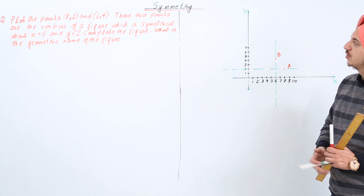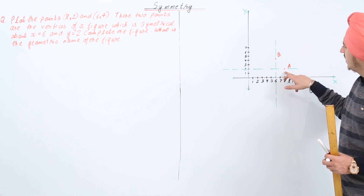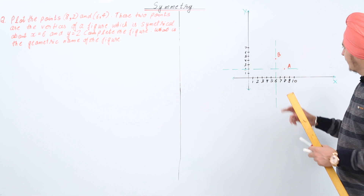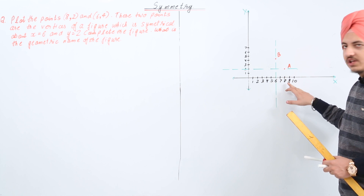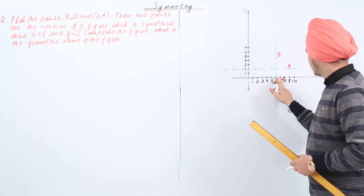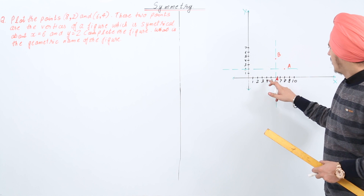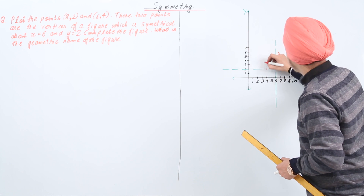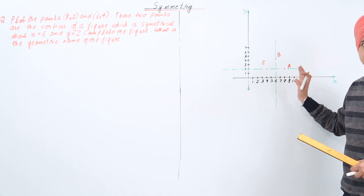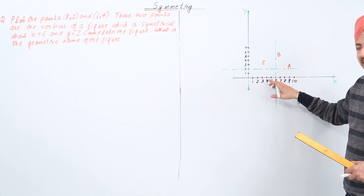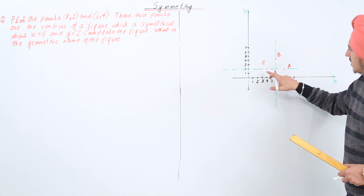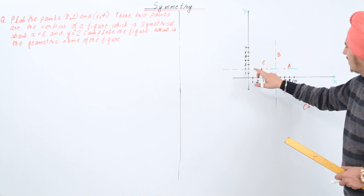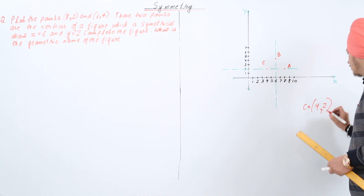In order to complete the figure, we first take the mirror image of A about x = 6. Point A is 2 units to the right of x = 6, so we move two units towards the left of x = 6, on the line y = 2, and mark a point there — let's name it C. The coordinates of C are (4, 2).